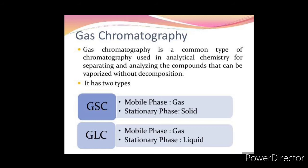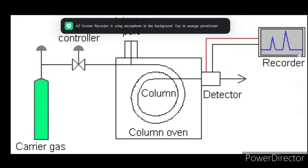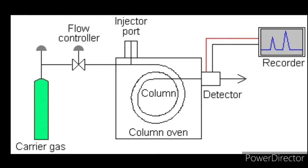In the column, due to adsorption or partition of constituents of sample between stationary phase and mobile phase, separation of constituents occurs. Now let us understand the instrumentation behind gas chromatography. This is the basic schematic representation of a typical gas chromatograph in which we have different components such as carrier gas cylinder, flow controller, injector port, column kept in column oven, detector, and recorder. Now let us understand each and every component in detail.